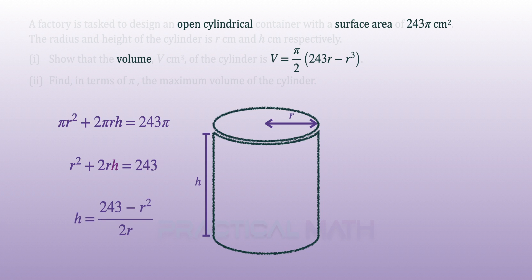Notice that the final equation in the question does not have h. We will now make h the subject of the formula so that we can substitute it later. The volume of a cylinder is πr²h. Substituting h from the previous step, we should get this equation. By simplifying r, we have managed to prove that V = (π/2)(243r - r³).